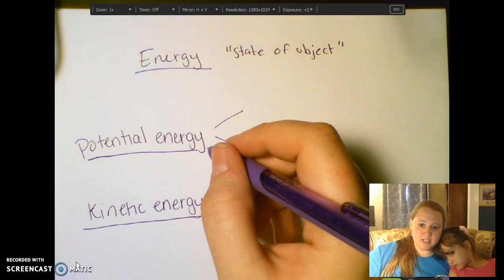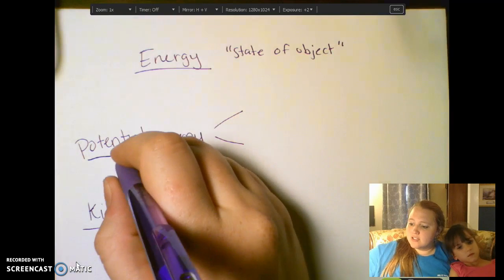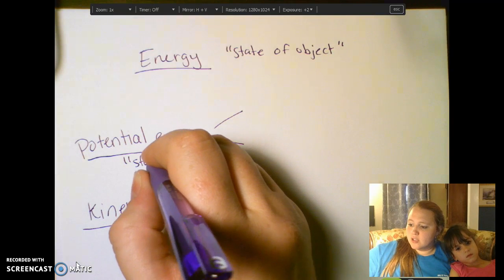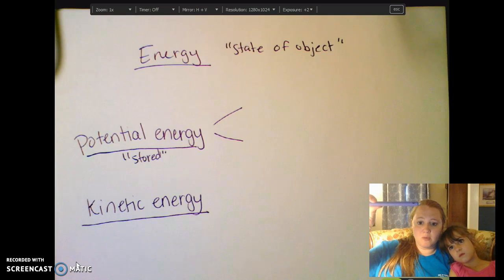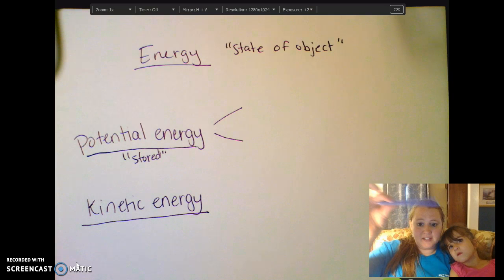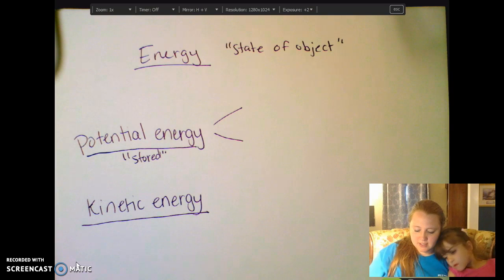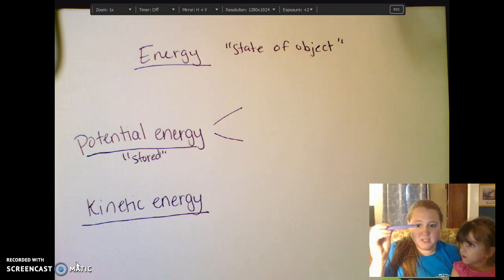Now to start out with, we're going to look at potential energy. Potential energy is defined as stored energy. Could it do something? For instance, if I hold my pen up some height, if I drop it, then gravitational potential energy is going to cause it to fall.